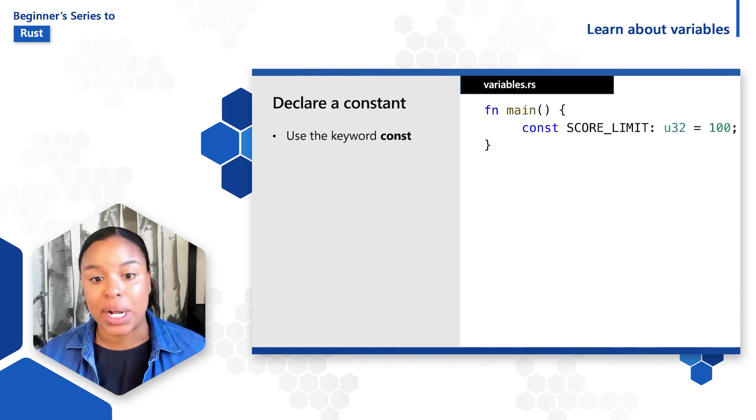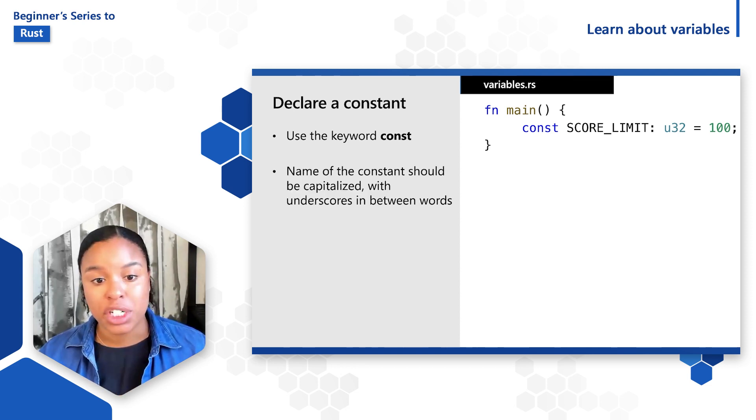An example of declaring a constant looks like this. Here I have a const named SCORE_LIMIT with the type u32, which is an unsigned integer 32-bit, and the value of that is 100. Note that the convention for constants is to use all capital letters with the name and have underscores in between the words.